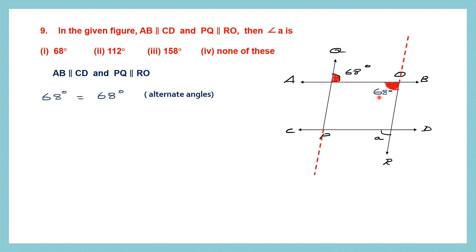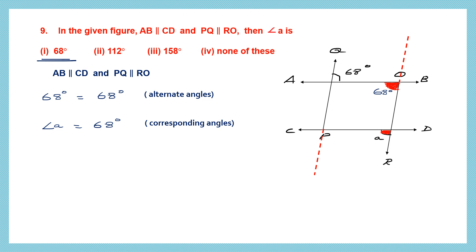Now I can take this angle down. Looking at these two parallel lines, 68 and angle A are corresponding angles, and corresponding angles are equal. So angle A equals 68 degrees. That is option 1, 68 degrees.